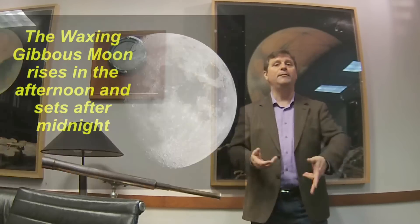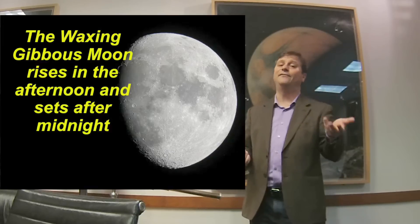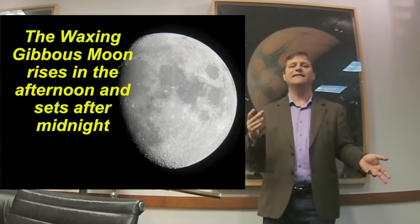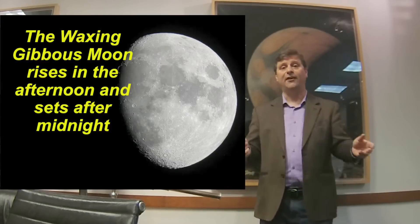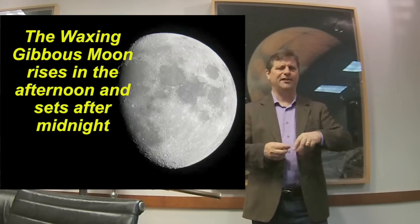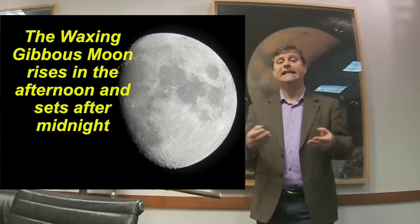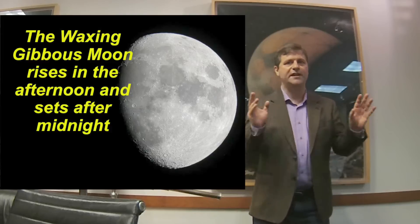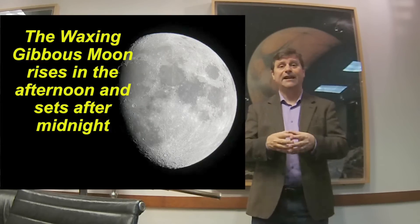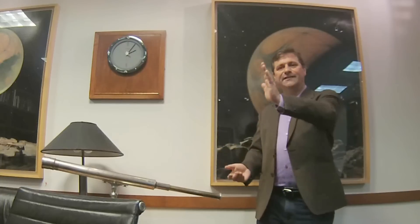Gibbous Moons are up most of the night. A gibbous Moon rises in the afternoon, so as the Sun sets it's already up in the sky, and it sets after midnight. Stargazing gets tough during Gibbous Moons because the Moon is up very much most of the night. We're better off abandoning stargazing for galaxies and nebulae during the Gibbous phase, though we can always look at the Moon with small telescopes or binoculars. The waning Gibbous Moon rises after sunset and sets well after sunrise.